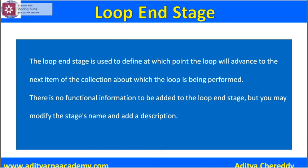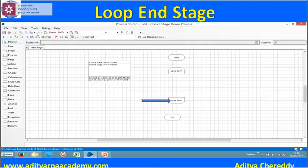It is used to define at which point the loop will advance to the next item of the collection about which the loop is being performed. There is no functional information to be added to the loop end stage, but we may modify the stage's name and description.